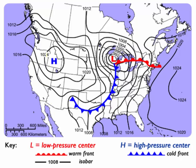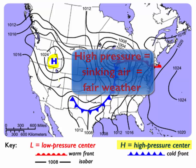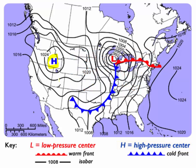So let's start over here with this H over Idaho. H means high pressure — high air pressure means sinking air, sinking air means fair weather, sunny weather, stable weather. It could be cold or it could be hot, but usually you've got pretty stable conditions and you don't have rain.